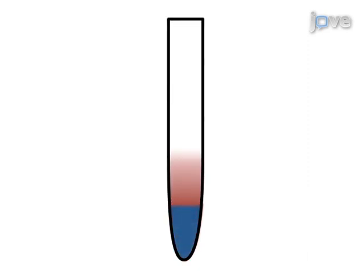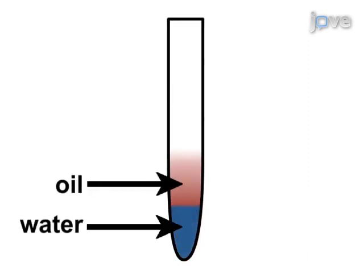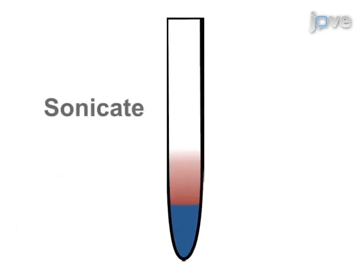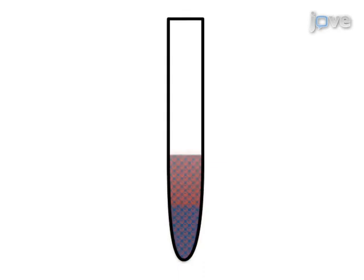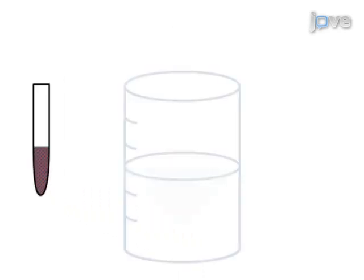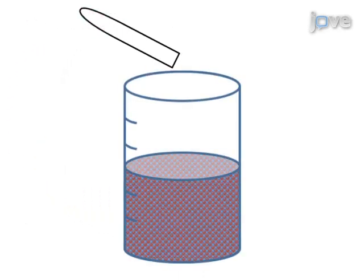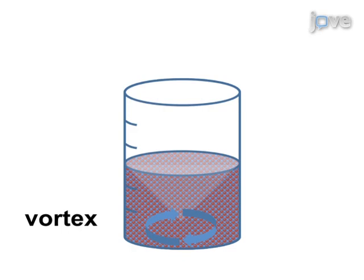The second step is to emulsify the polymer with a water phase containing the emulsifying agent and then allowing the particles to harden in a larger aqueous volume as the solvent evaporates.